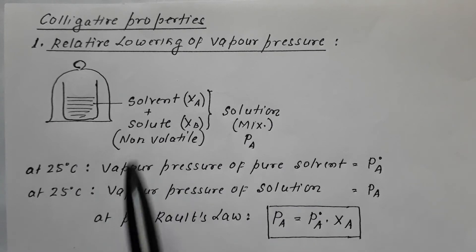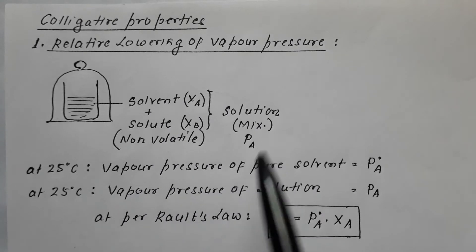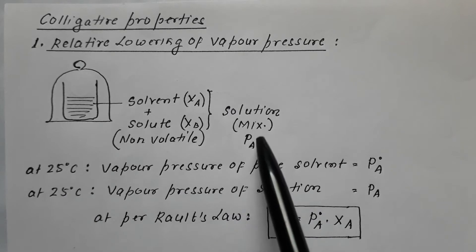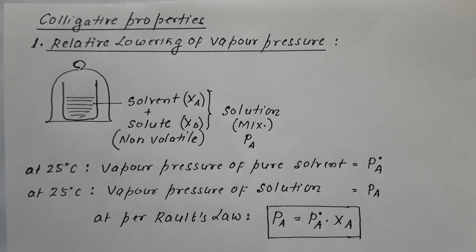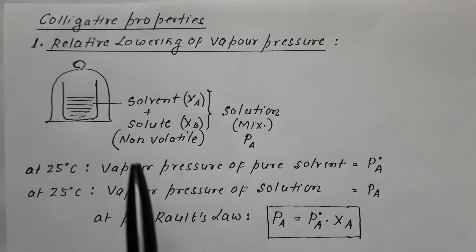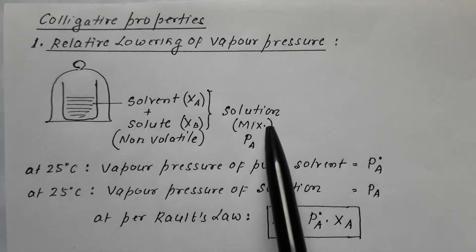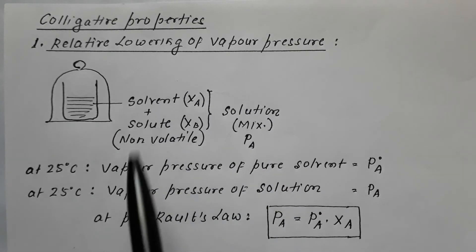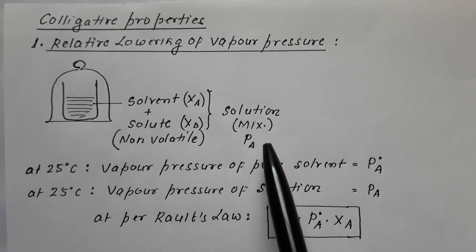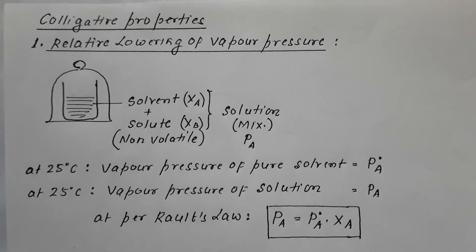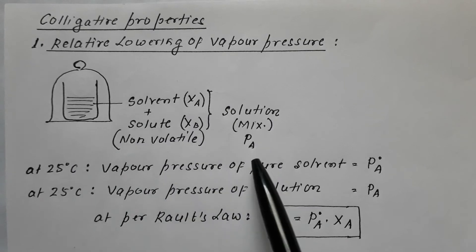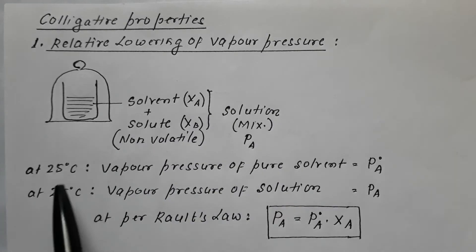Now into this pure solvent I add a non-volatile solute, which results in the formation of a solution. A solution is a mixture, and since it is a mixture it will have two components, both of which will have their own mole fraction. Suppose the mole fraction of solvent is XA, that of solute is XB, and the vapor pressure of this solution is PA.